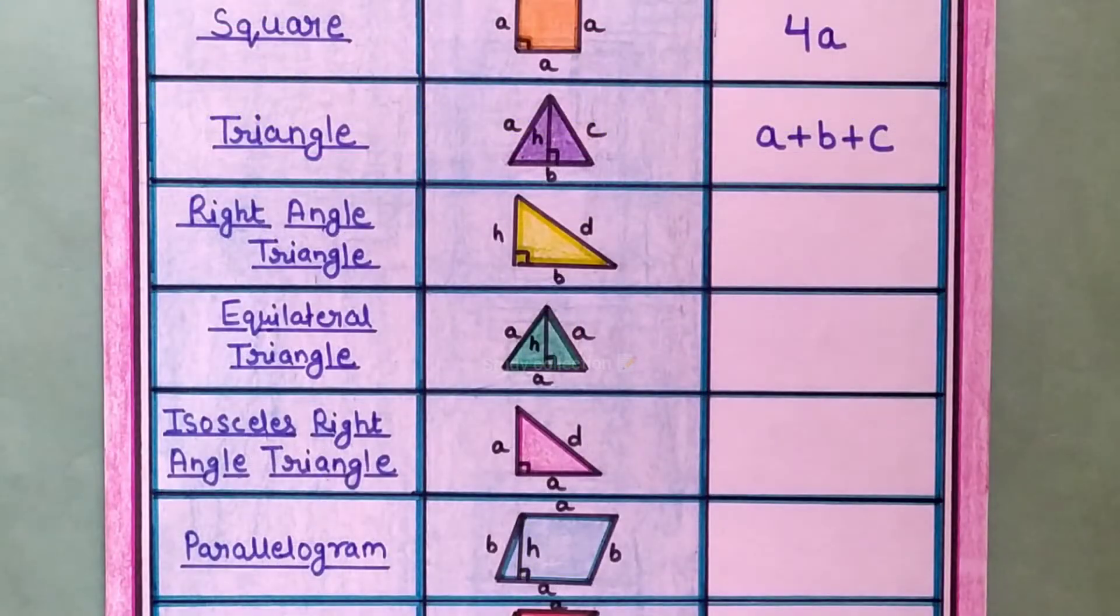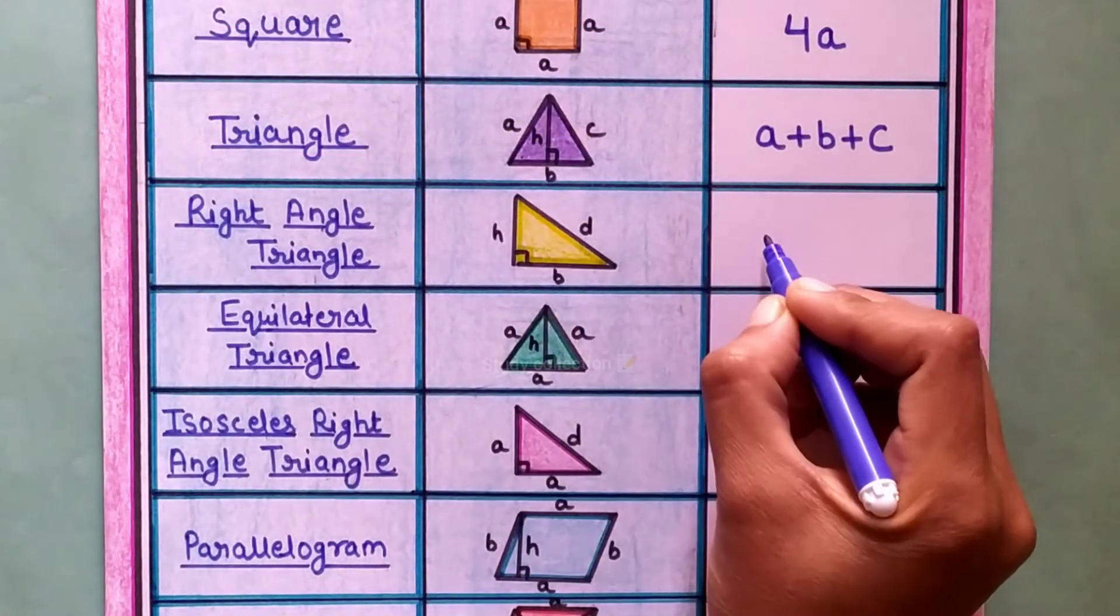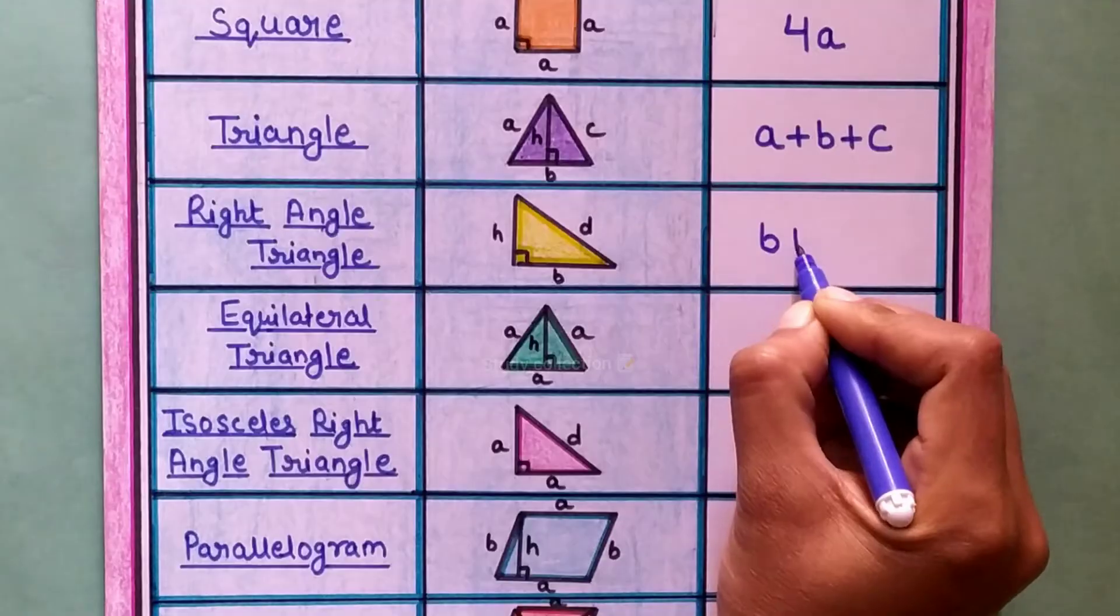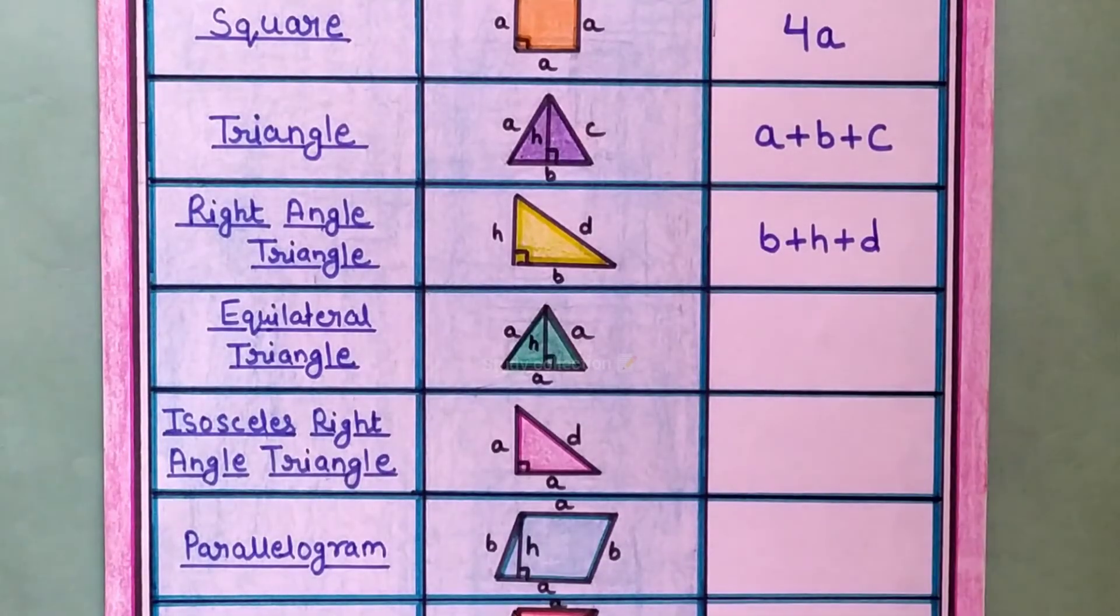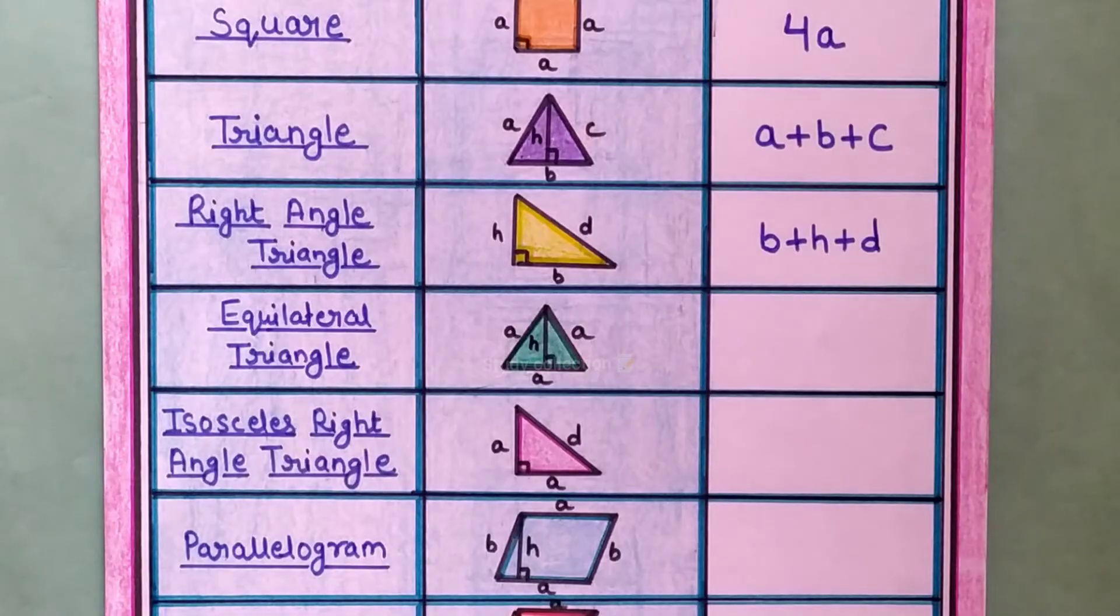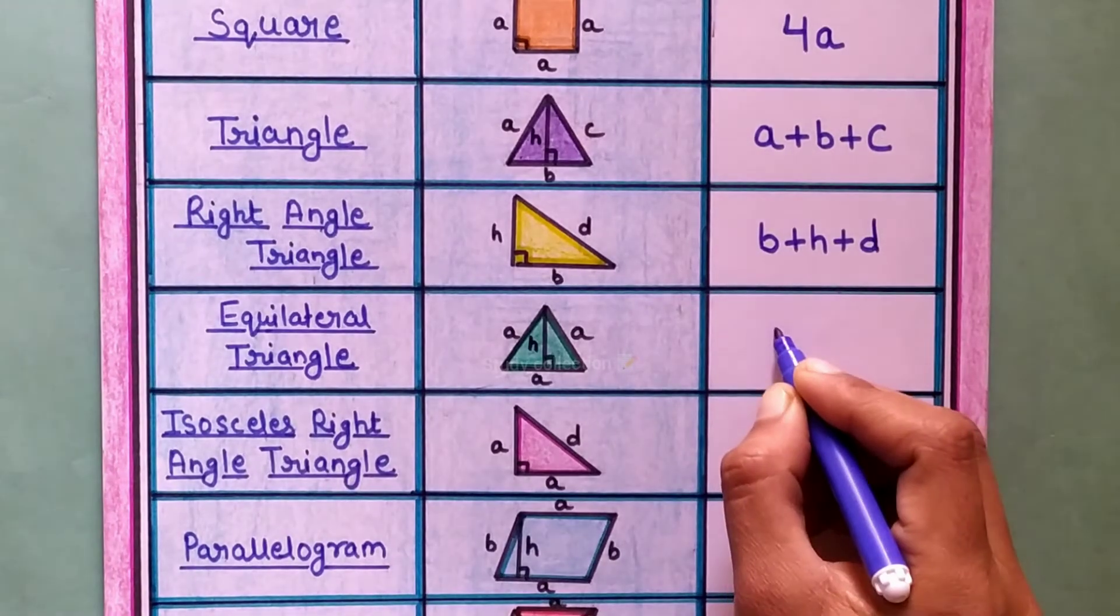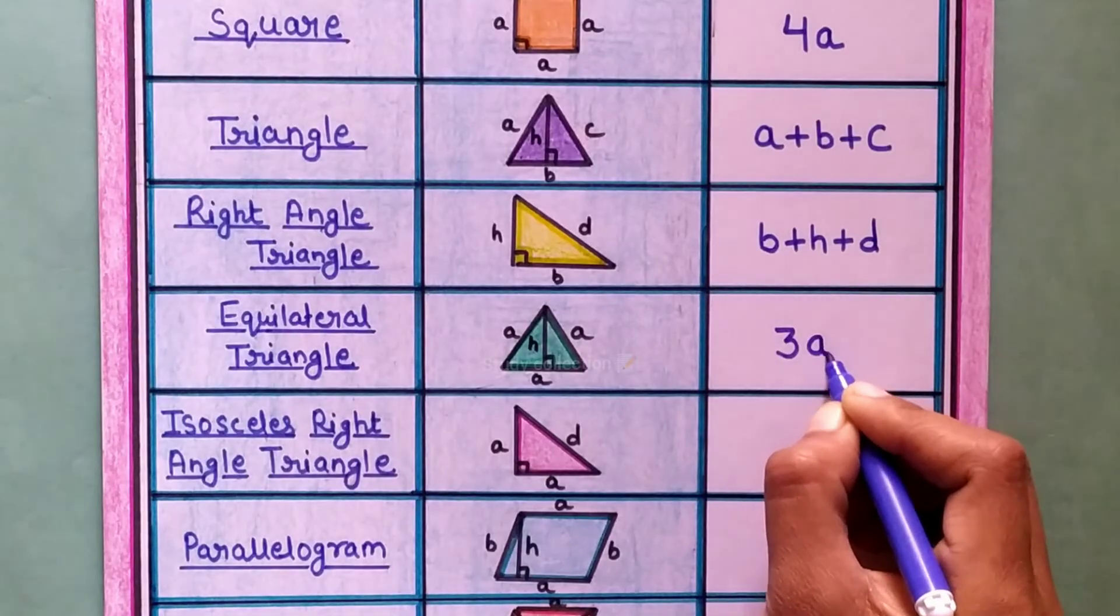Next is right angle triangle. Its perimeter formula is B plus H plus D. Next is equilateral triangle. The perimeter formula of an equilateral triangle is 3 into A.